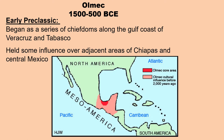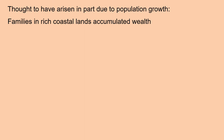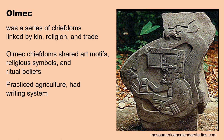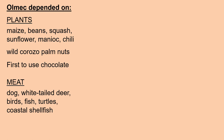Let's begin with the Olmec, who were in power between 1500 and 500 before the Common Era. During the early Preclassic, Olmec began as a series of chiefdoms along the Gulf Coast of Veracruz and Tabasco. These chiefdoms held some influence over adjacent areas of Chiapas and Central Mexico. They are thought to have arisen in part due to population growth, as families accumulated wealth along the rich coastal lands. The Olmec heartland is only about 125 miles long and 50 miles wide along the coast. Olmec was a series of chiefdoms linked by kinship, religion, and trade, and they all practiced agriculture and had a rating system.